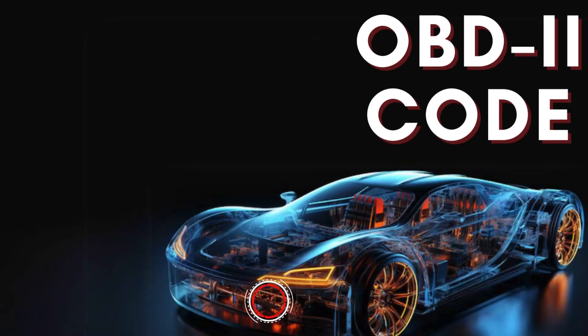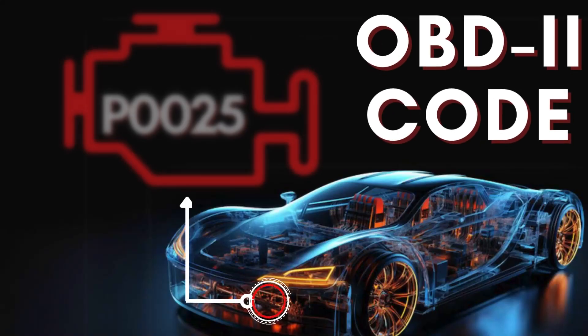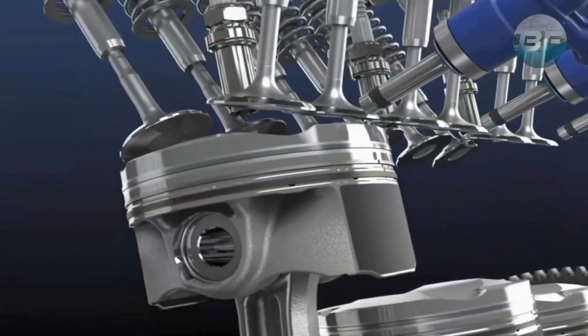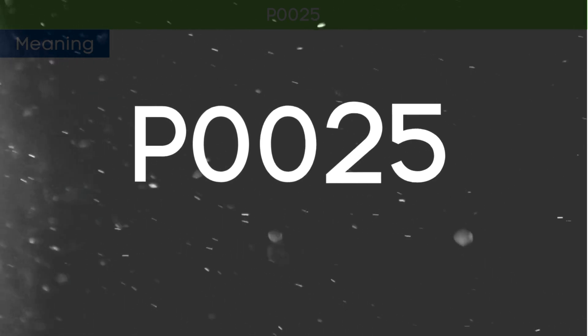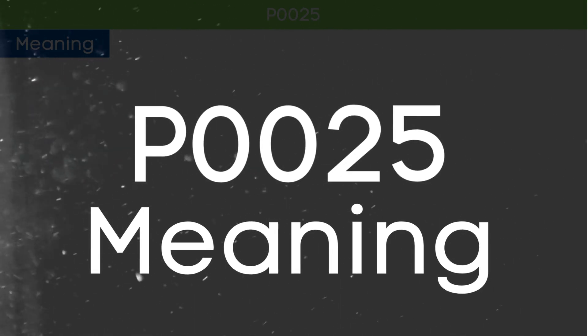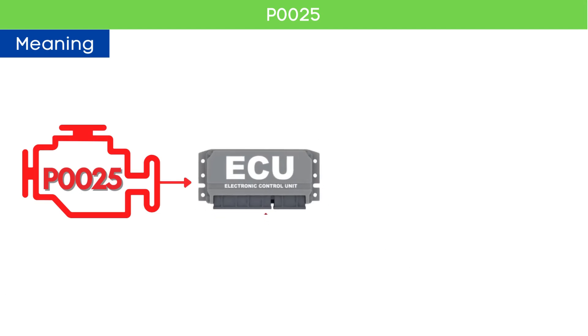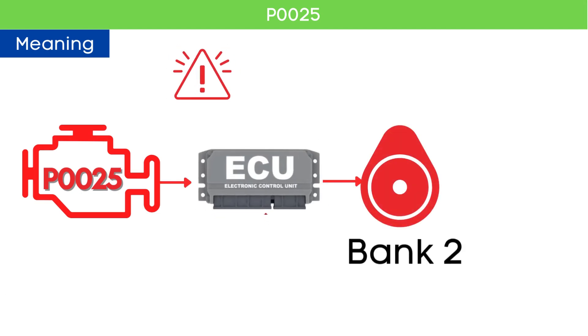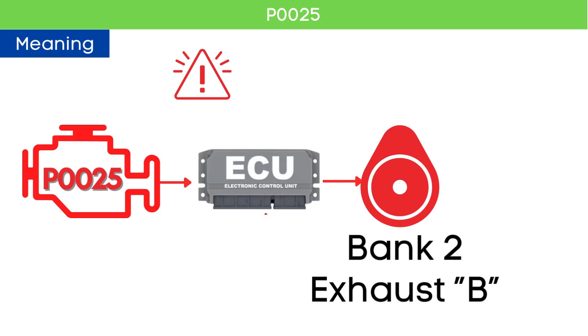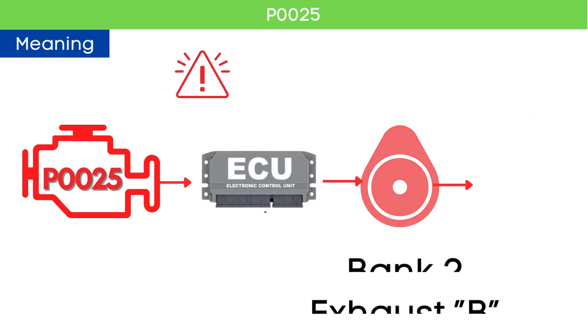Hey there! In this video, we're diving into everything you need to know about OBD-2 Trouble Code P0025. First, let's understand what the P0025 code is. The P0025 code indicates that the ECM has detected that the camshaft timing for bank 2, specifically the exhaust camshaft, is over-retarded.